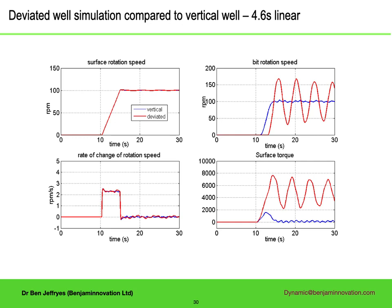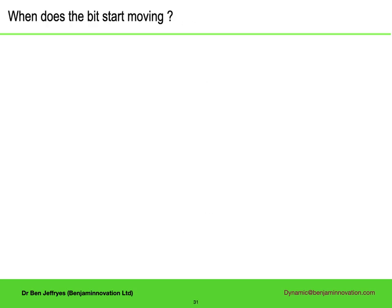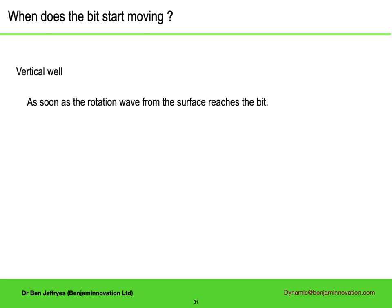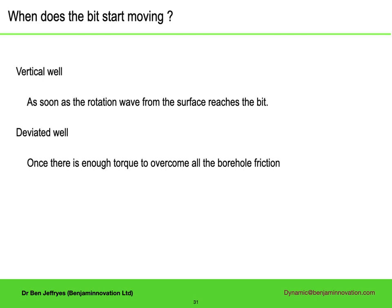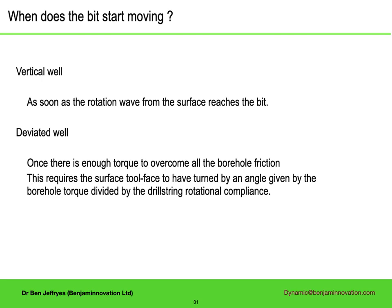The surface torque plots are very different. For the vertical well there is a burst of torque required to overcome the inertia of the drill string, after which the torque needed to maintain rotation is very low. In the deviated case there is a high average level needed because of the friction between the drill string and the borehole wall. To get the bit rotating, there has to be enough torque in the system to overcome all the borehole friction. But the drill string has rotational compliance, so the drill bit doesn't start rotating until the top of the drill string has turned enough — at least by an angle given by the total borehole frictional torque divided by the rotational compliance of the drill string.